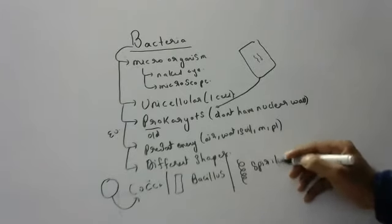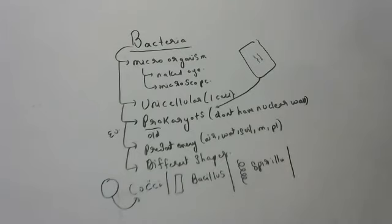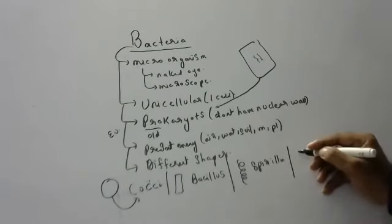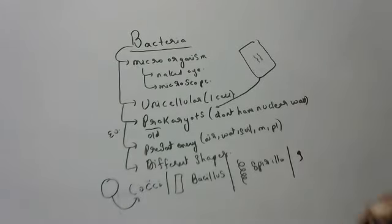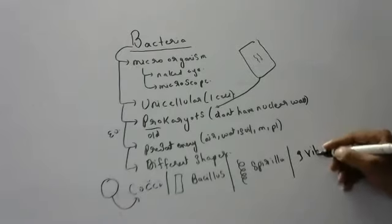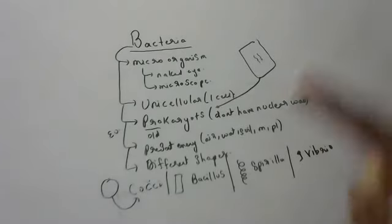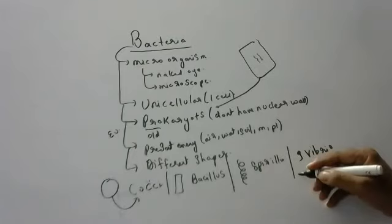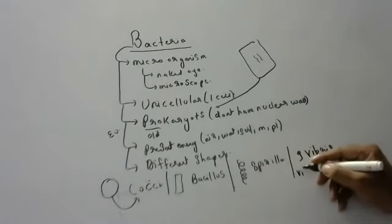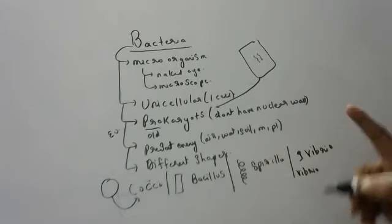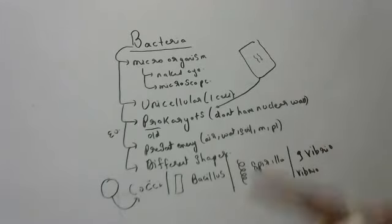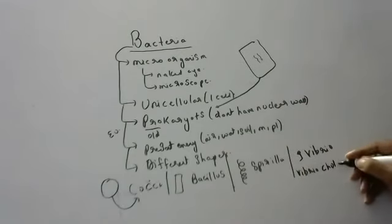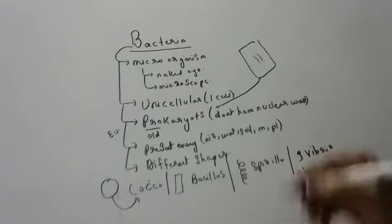Spiral-shaped bacteria are called Spirillum. Comma-shaped bacteria — like the comma punctuation mark — are called Vibrio. Do you know cholera is caused by a bacteria named Vibrio cholerae? Cholera, where we get loose motion, is caused by Vibrio cholerae bacteria. Whenever you see 'Vibrio,' you know that is a comma shape.